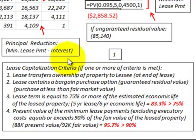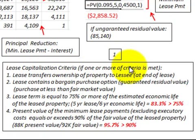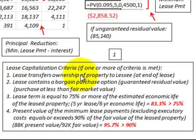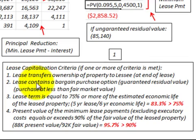The first thing we have to do with a capital lease is determine the lease capitalization criteria. If one or more criteria is met, it would be classified as a capital lease. The first criteria is that the lease transfers ownership of the property to the lessee at the end of the lease.